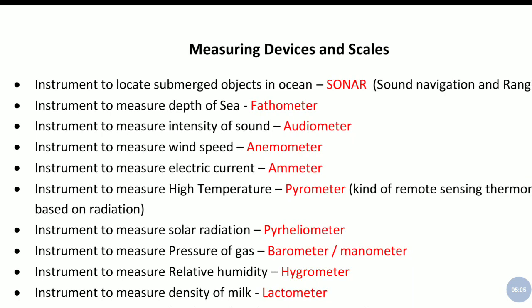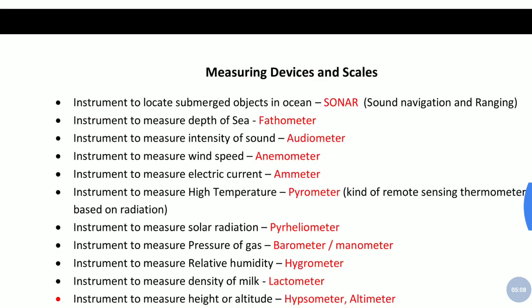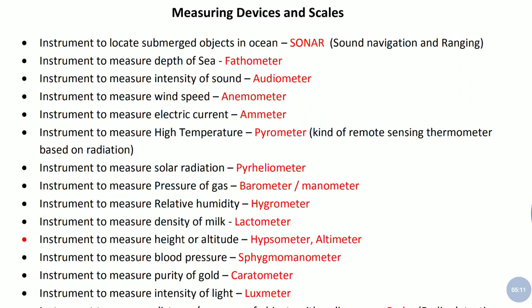Now we will learn about some measuring devices. Again, this is important because it has been asked in many state examinations. Instrument to locate submerged objects in ocean - it is sonar, which is sound navigation and ranging. Instrument to measure depth of sea - fathometer. Instrument to measure intensity of sound - audiometer. Instrument to measure wind speed - anemometer. Just remember it, anemometer. Instrument to measure electric current - ammeter.